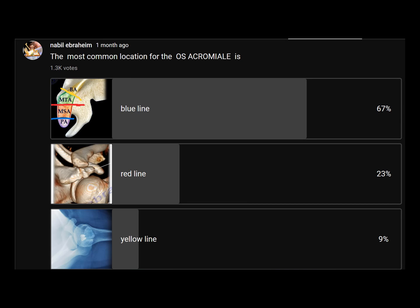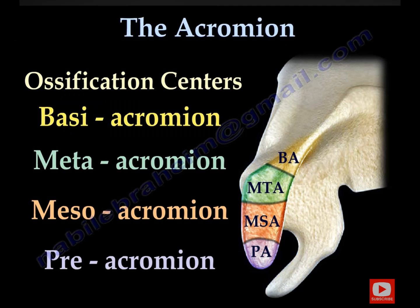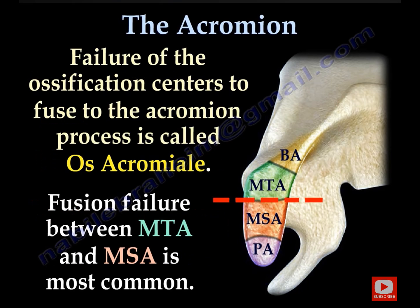What is the most common location for the os acromiale? Which line shows that area? The majority chose the lower line — no, it is the red line. The os acromiale has four centers, and the most common area where the ossification centers fail to fuse is between the meta and the meso, indicated by the red line.